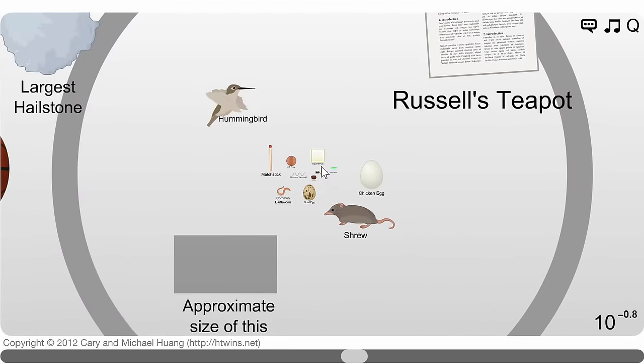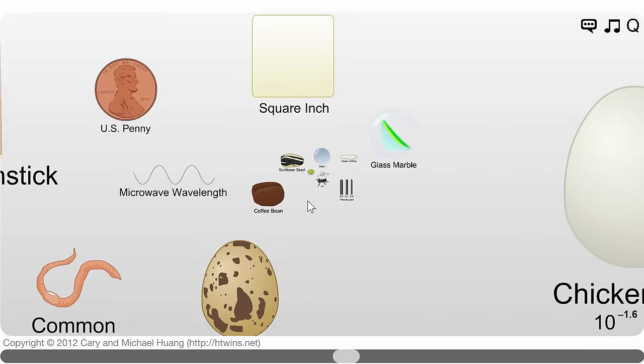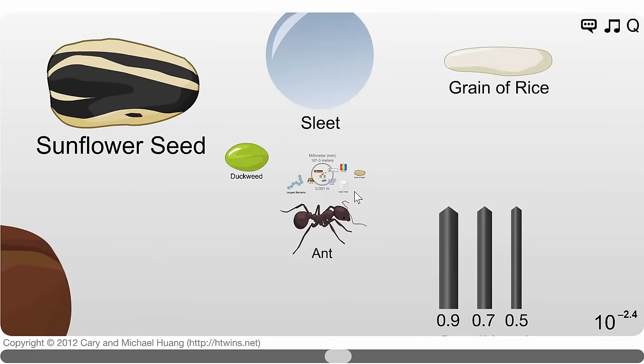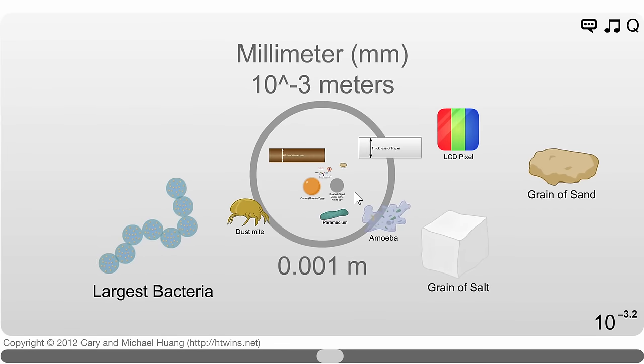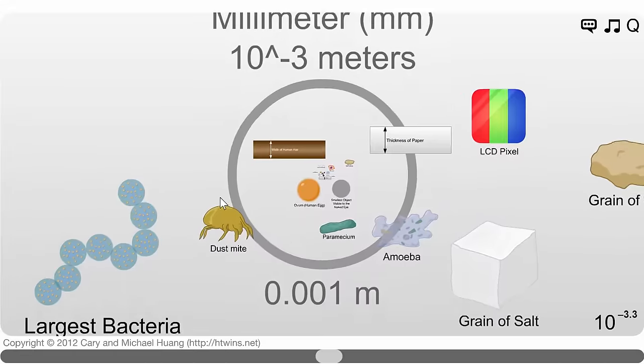So let's start by going a little bit closer and here's hummingbirds and shrews and matchstick and so on. This is what you would see if you were to start zooming in closer and closer. Now I'm going to just stop at some of the more interesting things, one of them being this largest bacteria that's basically only about a tenth of a centimeter.